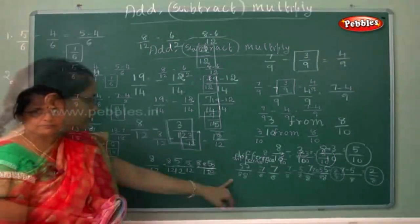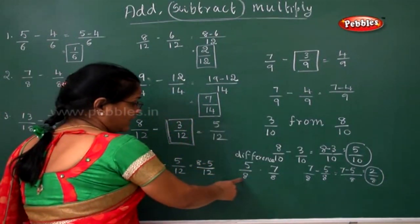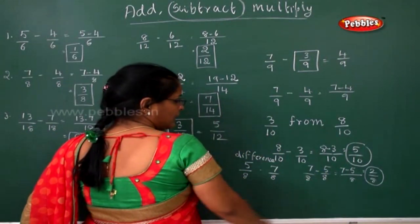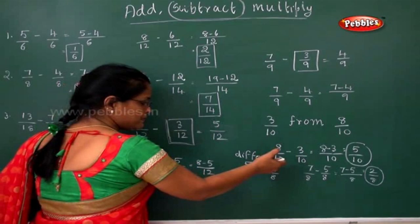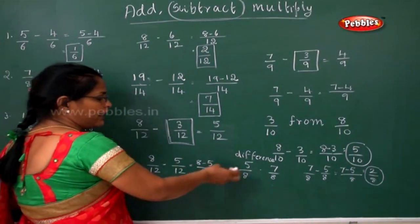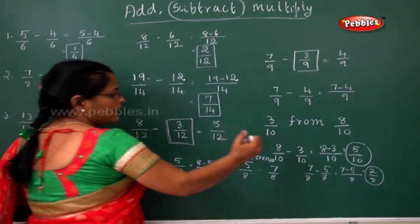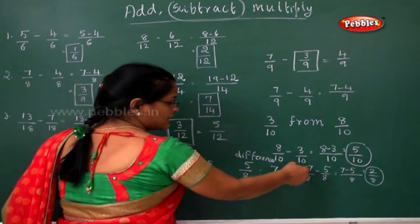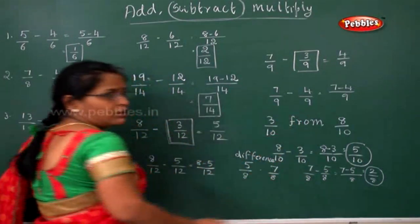Always remember: when finding the difference, take the bigger fraction and subtract the smaller number from it. For example, the difference between 5/8 and 7/8 — 7/8 is bigger, so you do 7/8 minus 5/8. Whether they say 'find the difference' or 'subtract from', always take the bigger number and minus the smaller number.